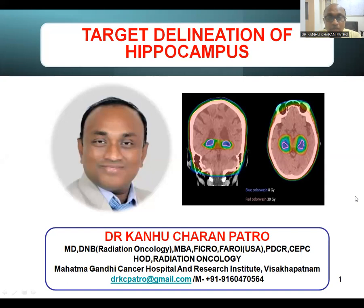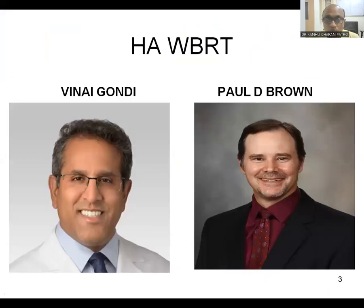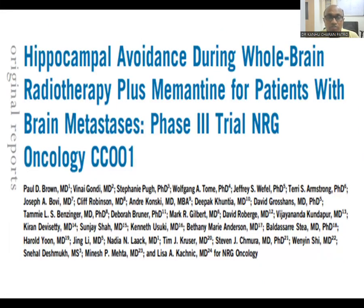Good evening everybody. Today I am going to talk about target delineation in the hippocampus. It is very important when you are planning for whole brain RT, specifically for hippocampal sparing, which means cognitive and memory preservation. Hippocampal contouring guidelines can be found in the RTOG 0933 protocol. The author is Vinai Gondi, and when comparing whole brain RT hippocampus evidence, two names come to mind: Vinai Gondi and Paul Brown. This is the RTOG NRG CC001 phase three protocol.